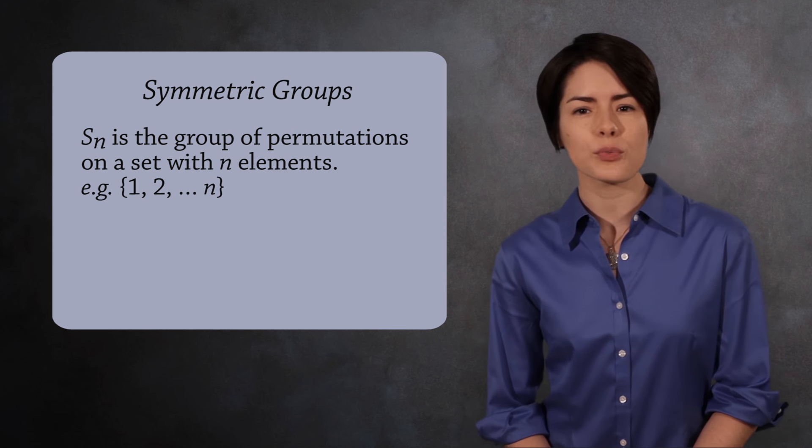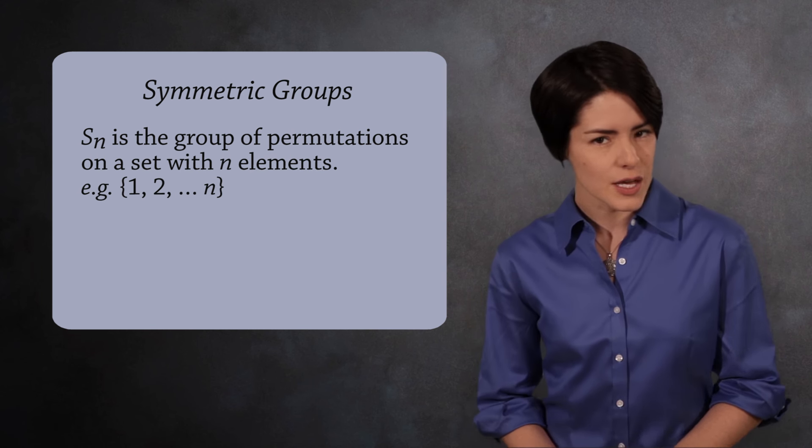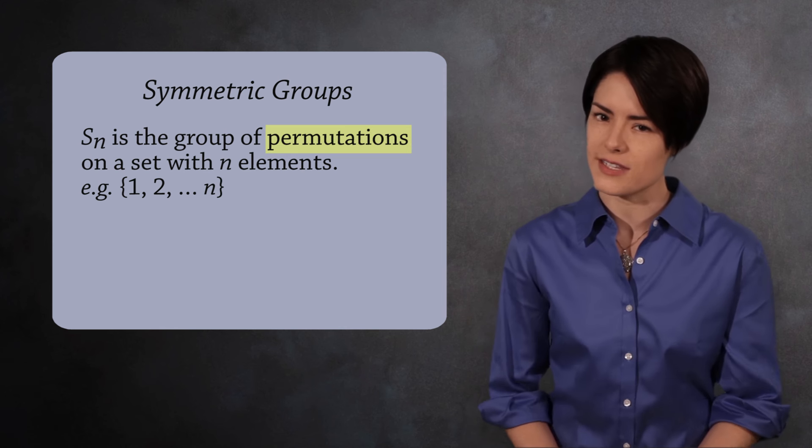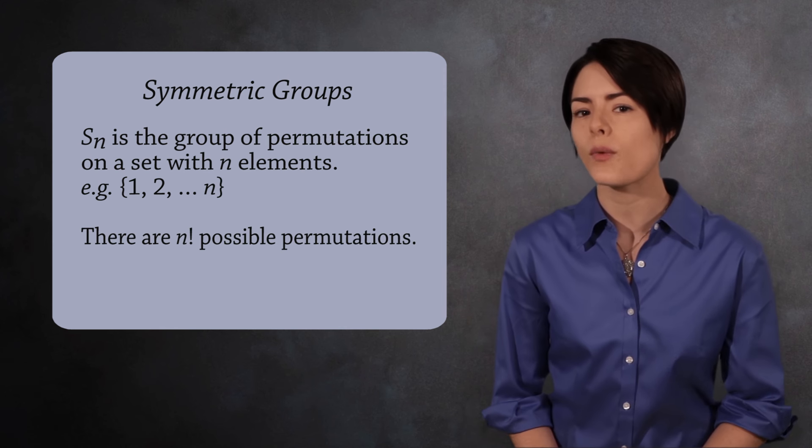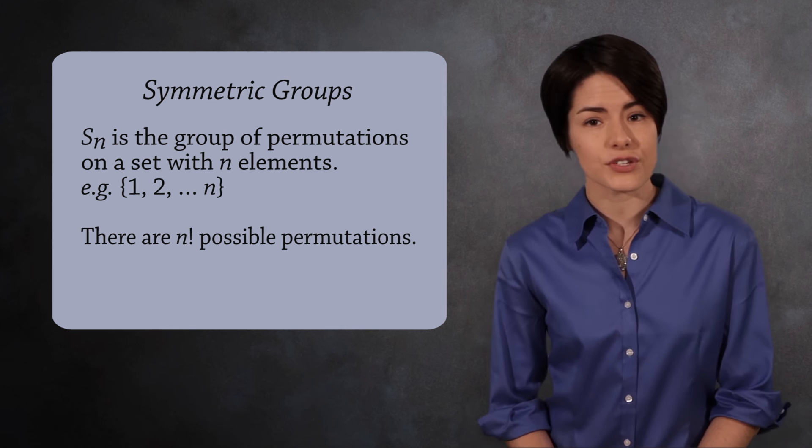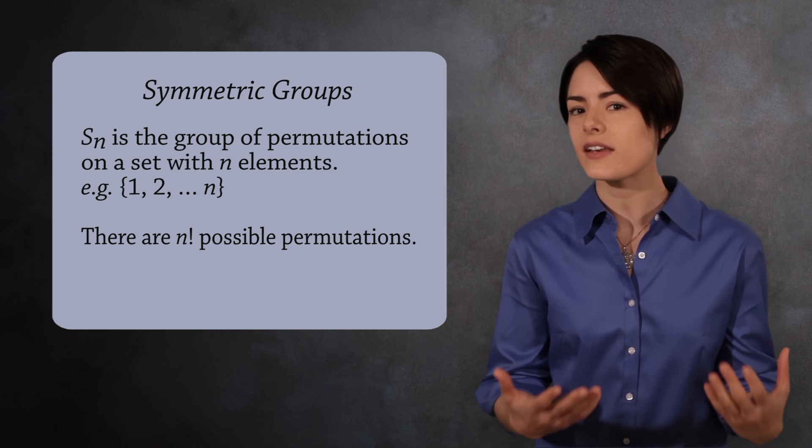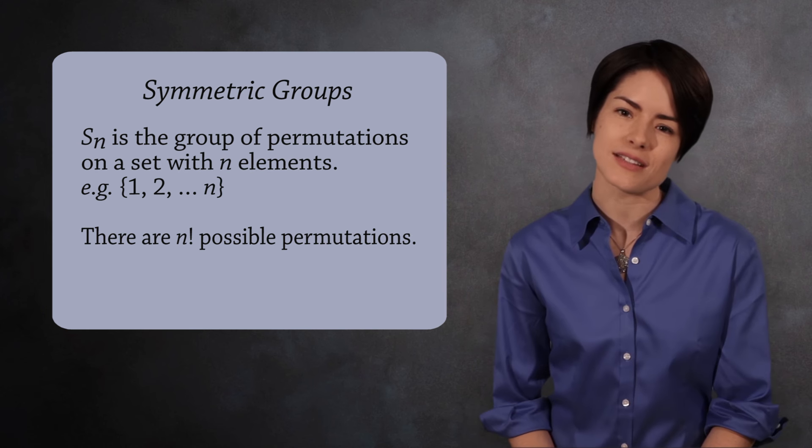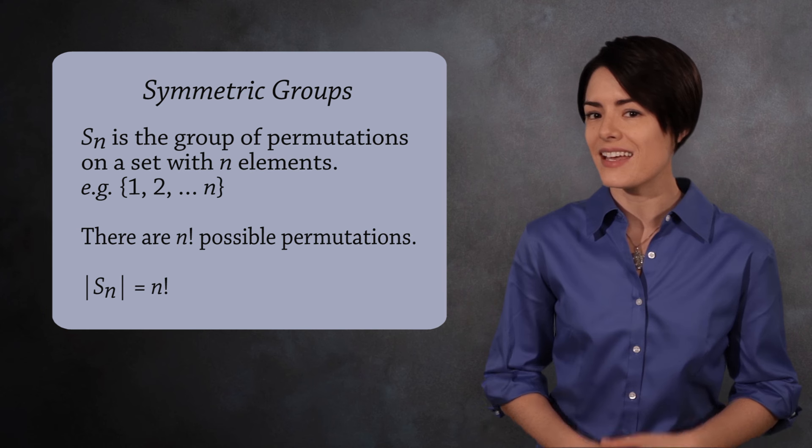The elements of the group are not the numbers 1 through n, but rather the permutations of the set. There are n factorial ways to rearrange this set of integers, so the group Sn is a finite group with n factorial elements.